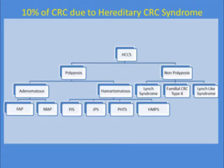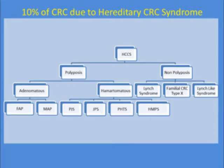10% of colorectal cancer cases in the United States are related to a hereditary colorectal cancer syndrome. I thought I'd show a basic diagram of the two buckets that I think about when we see patients in clinic — polyposis cases and non-polyposis cases.